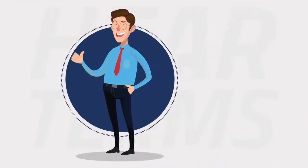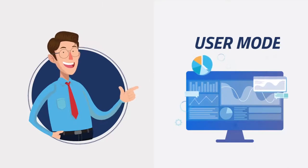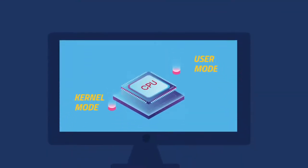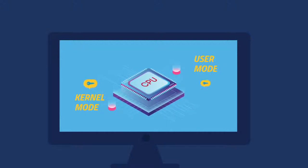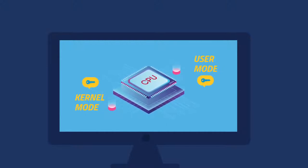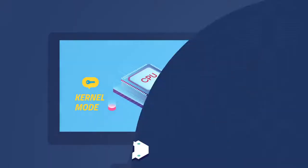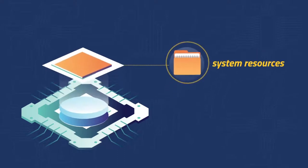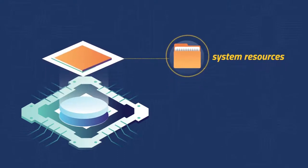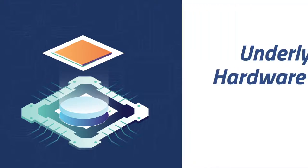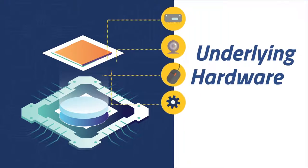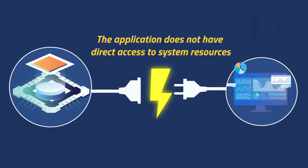You'll often hear the terms kernel mode and user mode to refer to this distinction. In every operating system, the CPU operates in these two modes, which differ in terms of the level of access given to system resources. All software running in kernel mode has full access to system resources and underlying hardware, whereas any processes or applications running in user mode are isolated and do not have access to RAM that's been allocated to the kernel or to other programs.